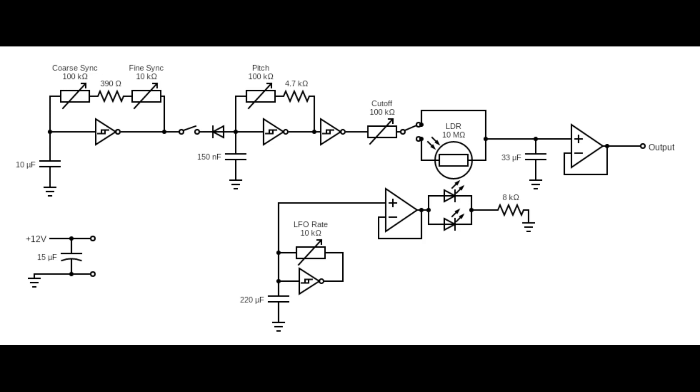This schematic includes, at the top left, an oscillator with sync which we have built in previous videos. Following the output of the oscillator is a cutoff knob for our low-pass filter. Along the top route, we meet the capacitor for our low-pass filter.